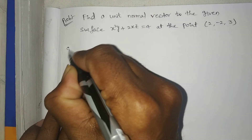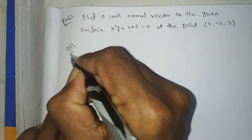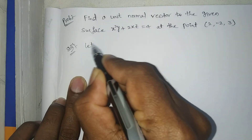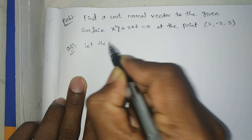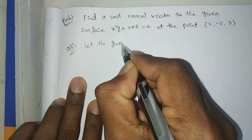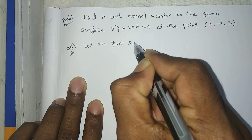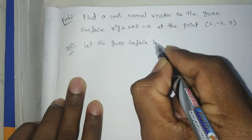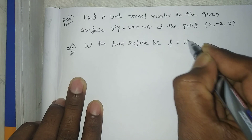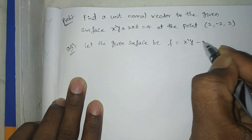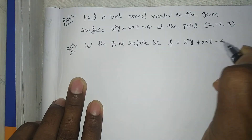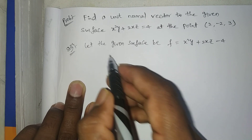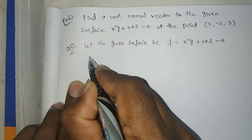Let the given surface be F equal to x squared y plus 2xz minus 4.